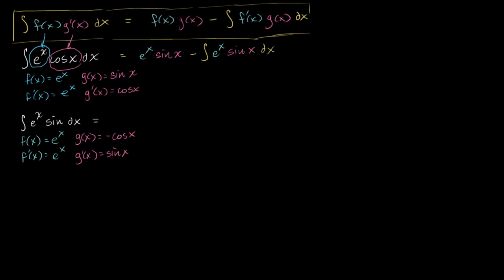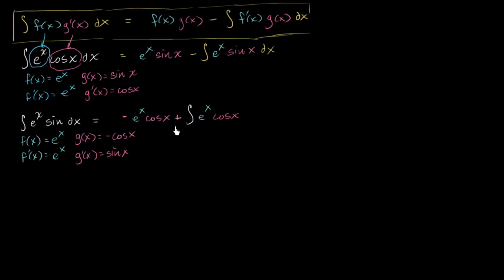Applying integration by parts again, we get f of x times g of x, which is negative e to the x cosine of x, minus the antiderivative of f prime of x times g of x — that's e to the x times negative cosine of x. We take the negative out of the integral, and subtracting a negative becomes a positive, giving us plus the antiderivative of e to the x cosine of x dx.